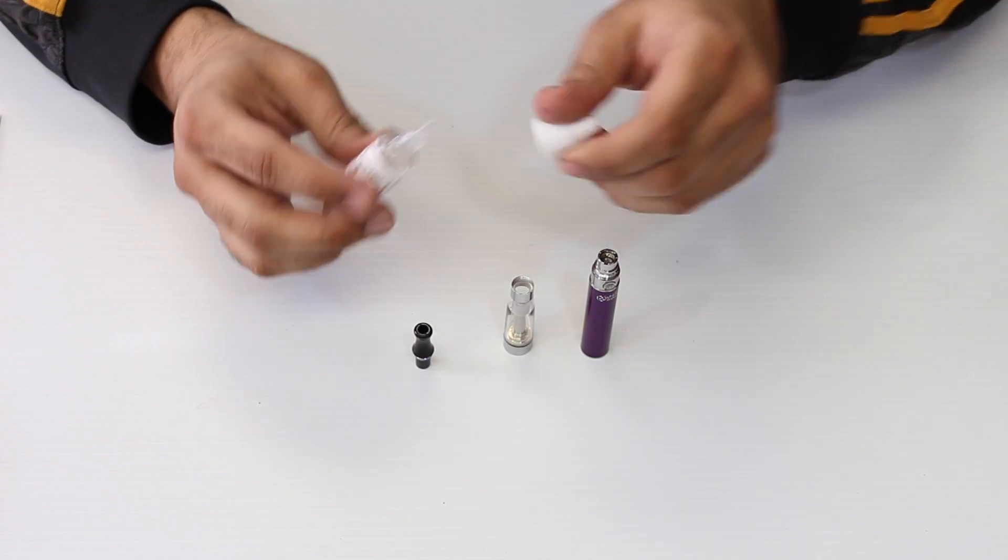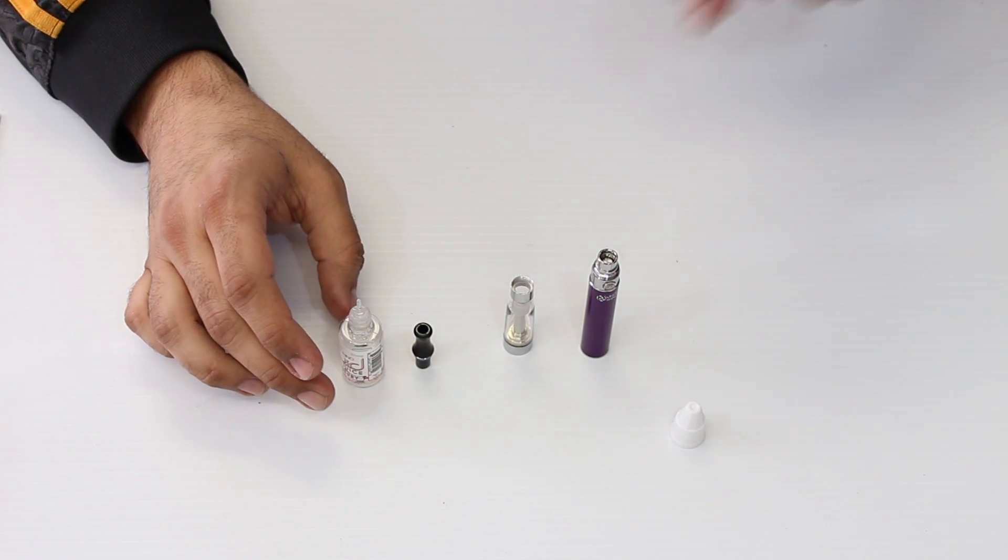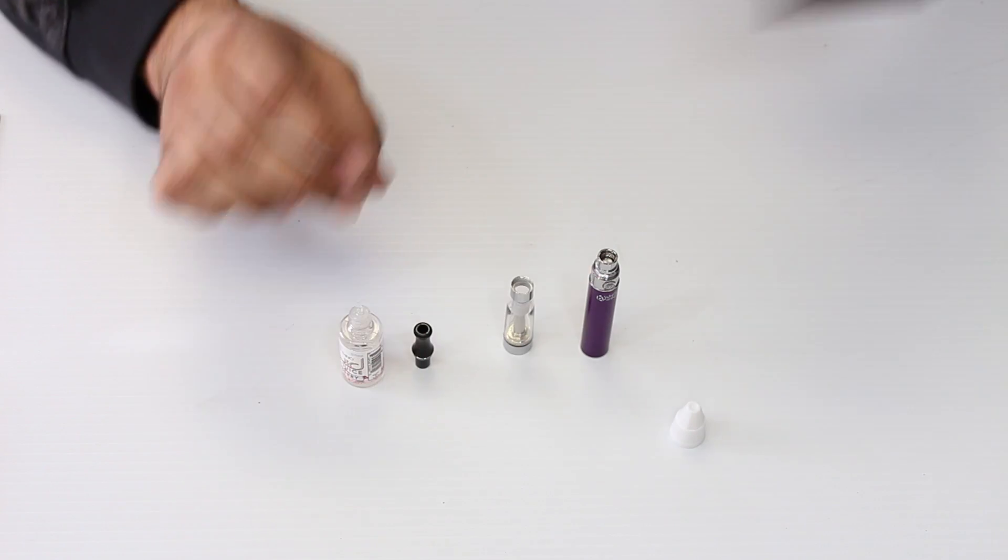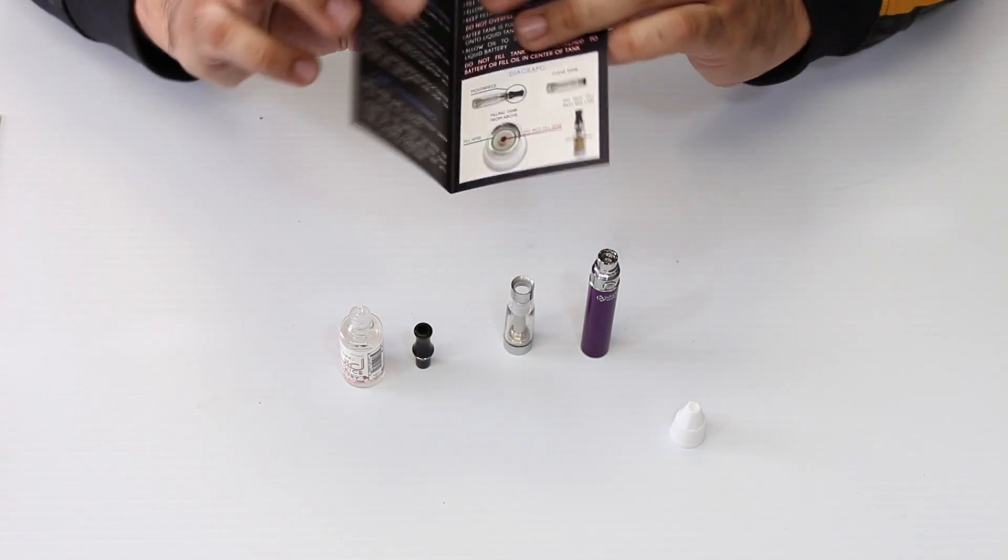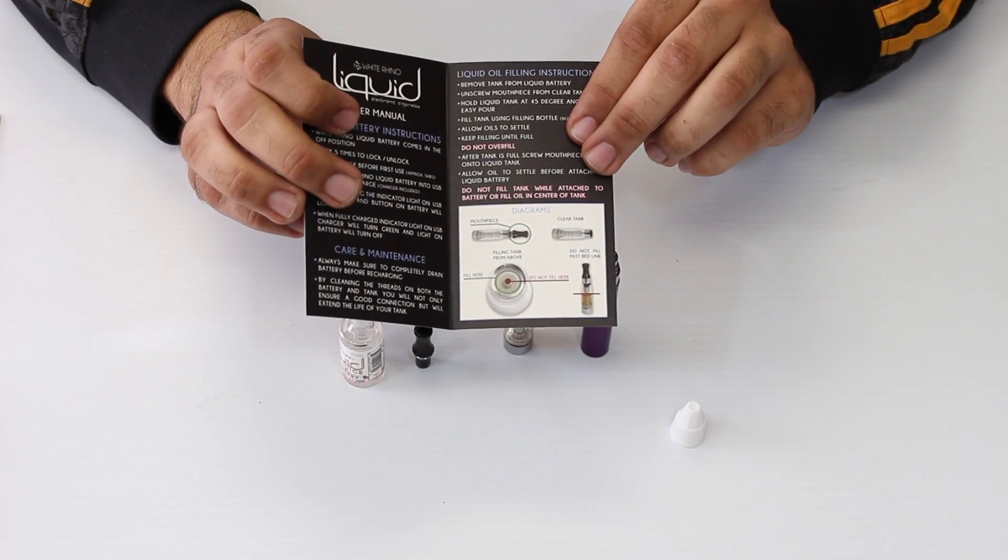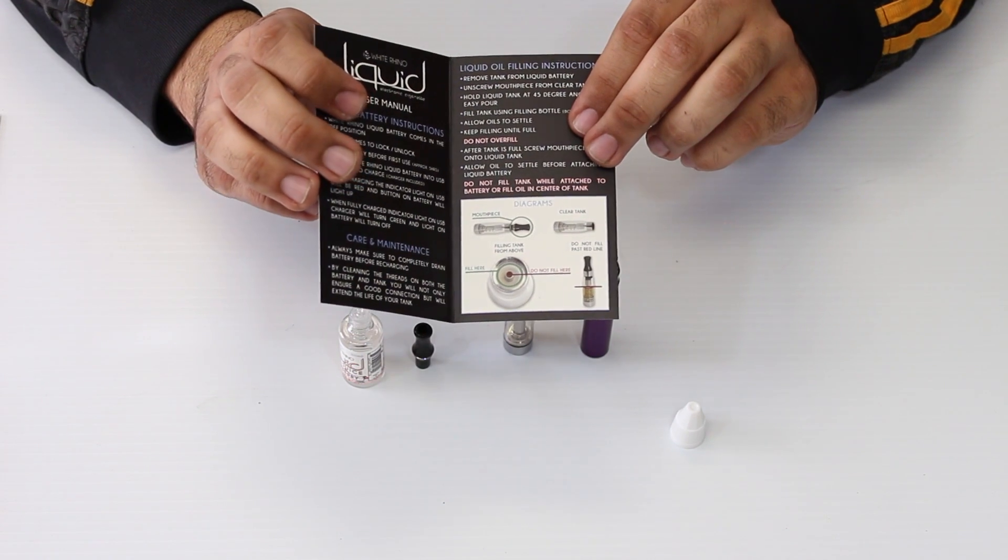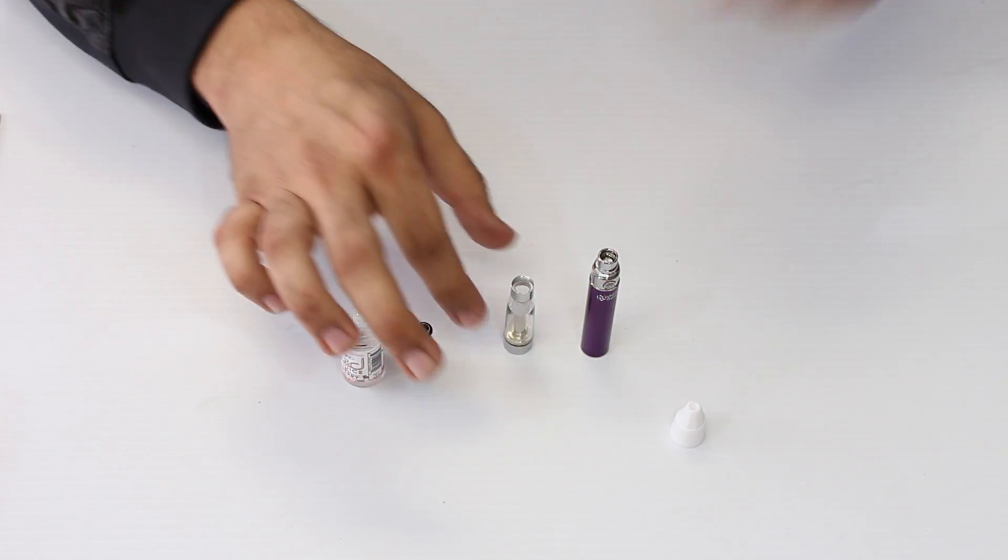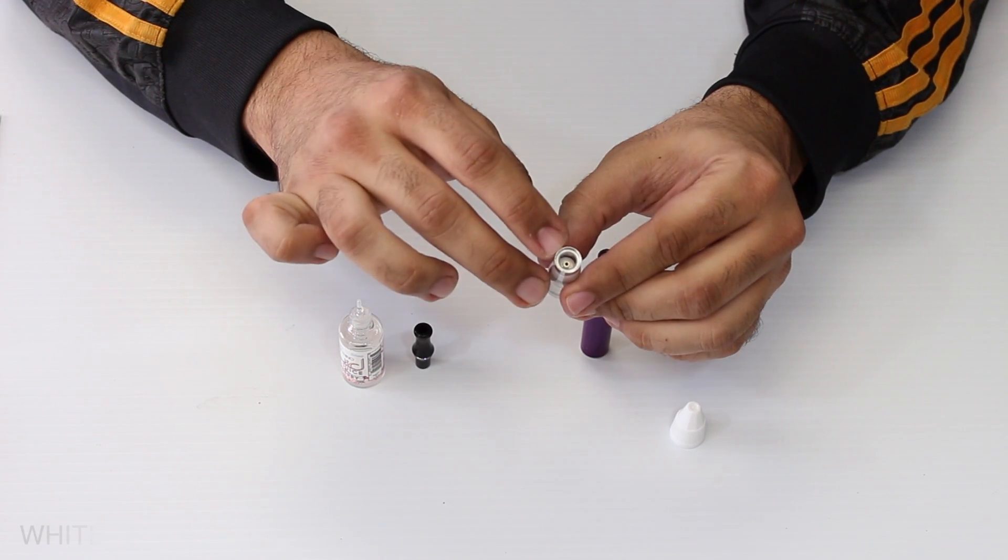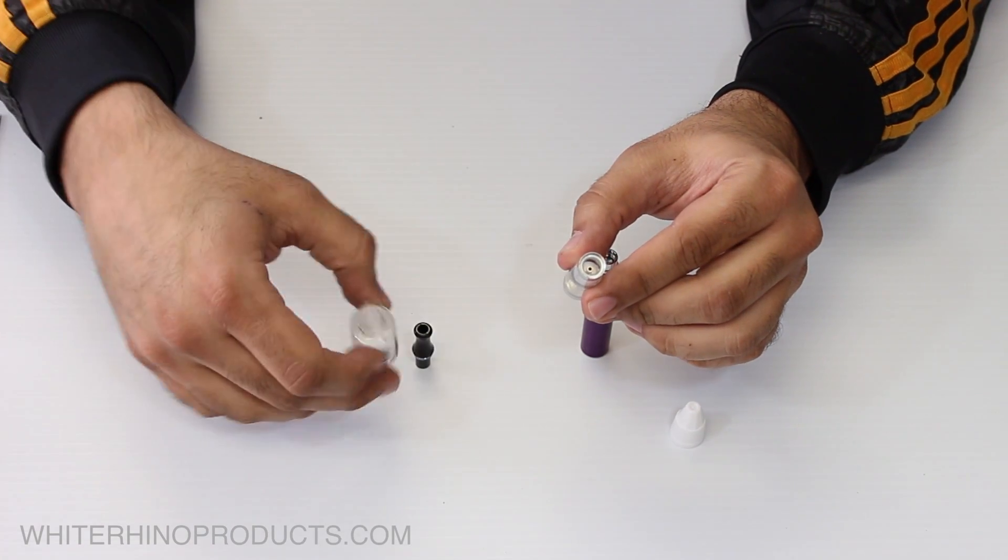It's really important when filling your liquid vaporizer by White Rhino you do it right. Just for reference, in the user manual on the inside, it does have some pictures just to let you know where to and not to fill. I'll also show you. When you look inside here, you'll see there's the coil or the little pin in the middle. You want to make sure it's not going down the middle.